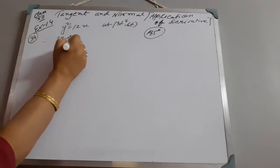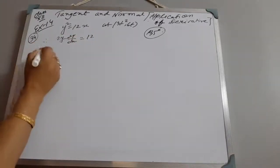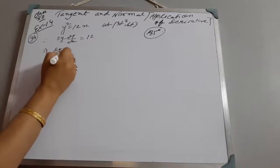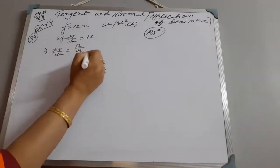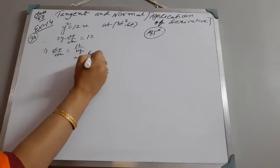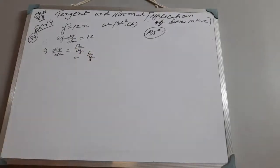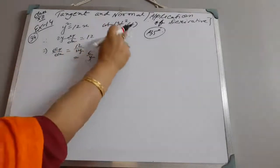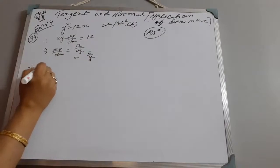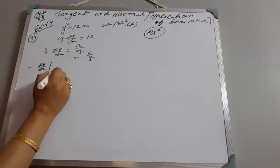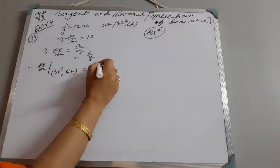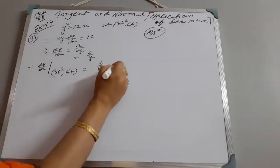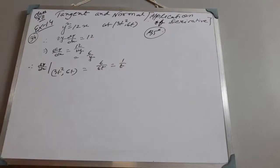From the equation, differentiating: 2y·dy/dx = 12, so dy/dx = 12/2y = 6/y. Therefore, dy/dx at the point (3t², 6t) gives us 6/6t, which comes to 1/t.